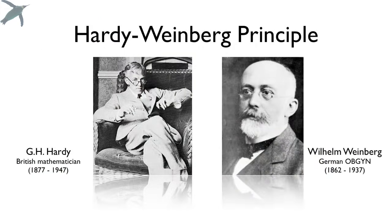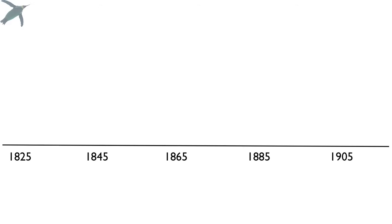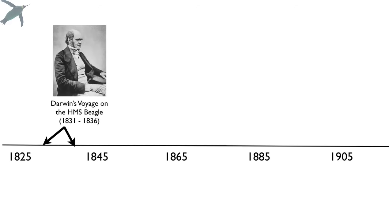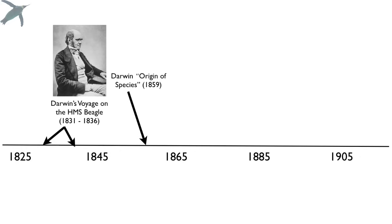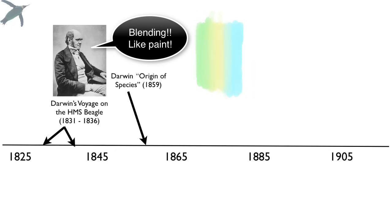You might assume that the Hardy-Weinberg principle came about from two people named Hardy and Weinberg who worked together, but that's actually not true. It's important to put their work into perspective on a timeline. We're going to start with Darwin. Darwin had a lot of great ideas about natural selection and changing through time, but like all of his contemporaries, he believed that offspring were a blended version of their parents.